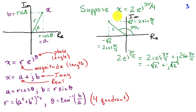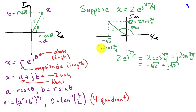Let's take an example where x equals 2 e to the j 3pi over 4. This is a point in the complex plane at distance 2 from the origin, with an angle of 3pi over 4 with respect to the positive real axis. Converting to rectangular coordinates, on the real axis we have negative square root of 2, which is 2 cosine 3pi over 4, and on the imaginary axis we have square root of 2, which is 2 sine 3pi over 4. So the polar form 2 e to the j 3pi over 4 equals negative square root of 2 plus j square root of 2 in rectangular coordinates.